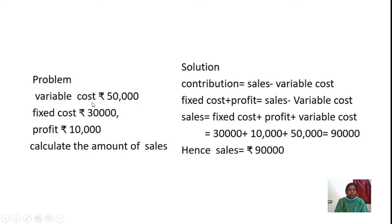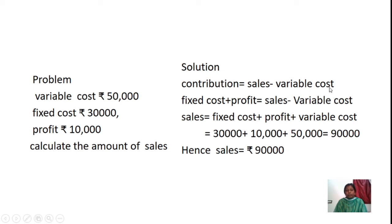Problem 3: Variable Cost Rs. 50,000, Fixed Cost Rs. 30,000, Profit Rs. 10,000. Calculate the amount of sales. In this problem we are calculating the amount of sales using the formula: Contribution = Sales − Variable Cost, which simplifies to Fixed Cost + Profit = Sales − Variable Cost.